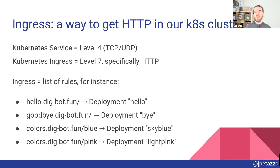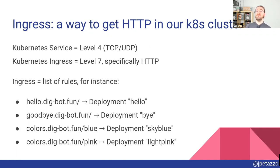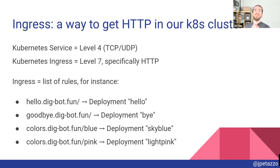Ingresses are a way to get HTTP traffic into our Kubernetes cluster. If you've used Kubernetes a little bit, you know we have a notion of services. Services are level-four load balancers — TCP or UDP. So if you want to connect to Postgres, Redis, Voice over IP, or whatever running on Kubernetes, you'd most likely use a service. But we also have the concept of ingress, which is layer seven, specifically to manage HTTP.